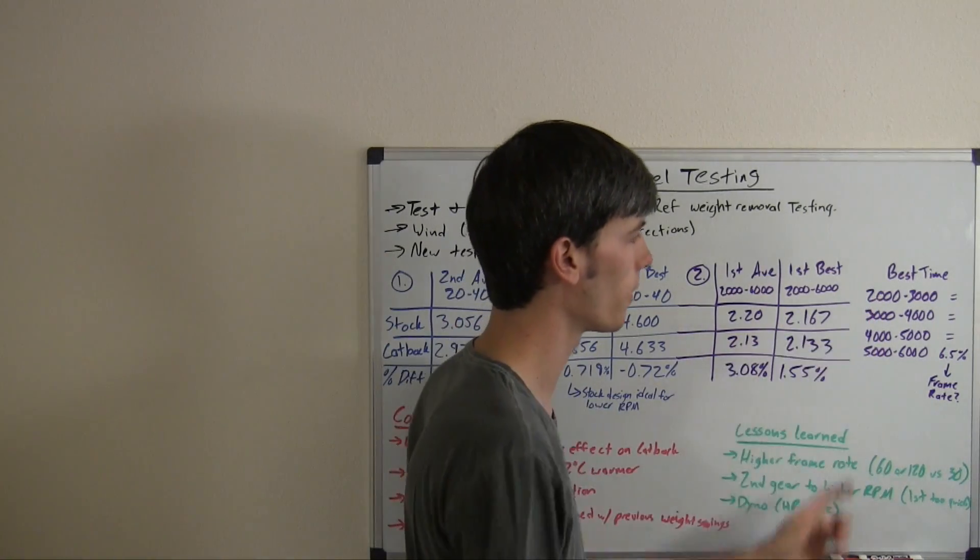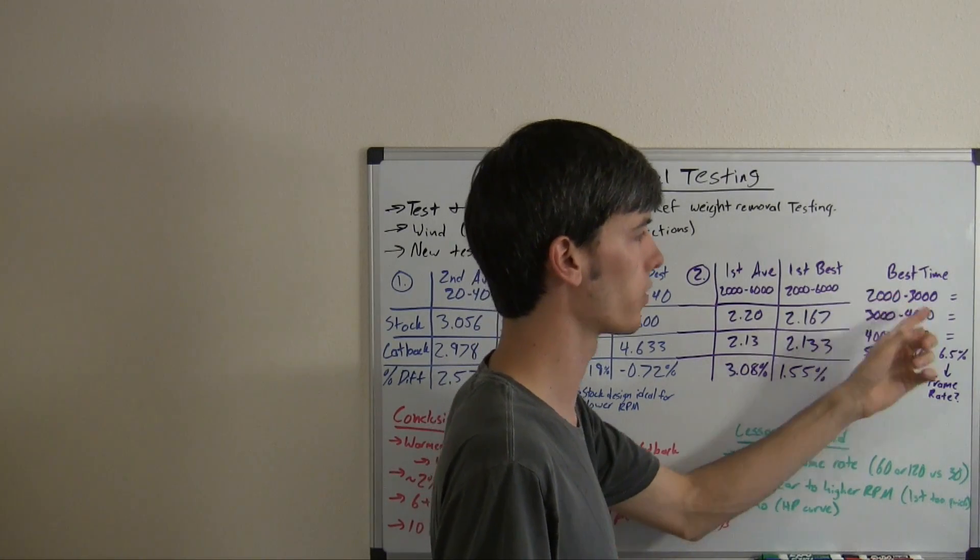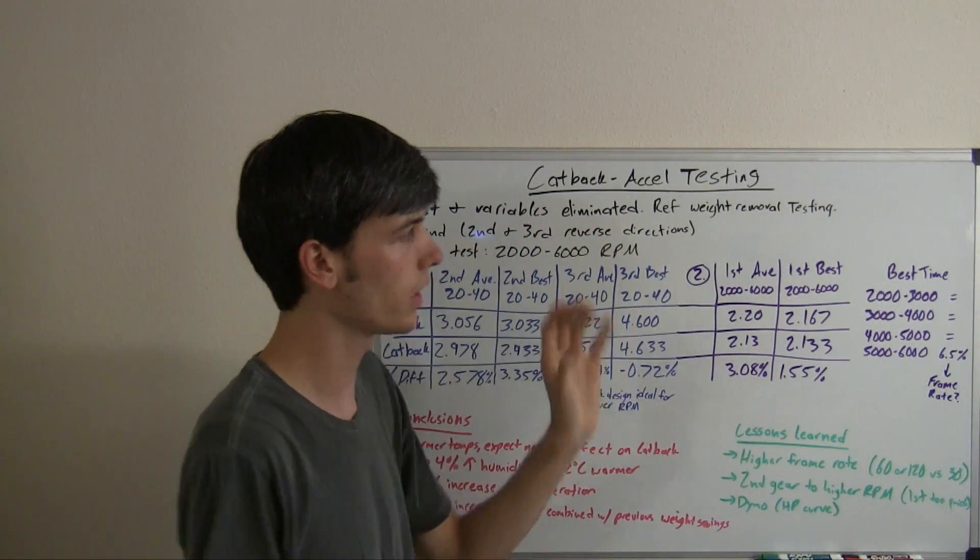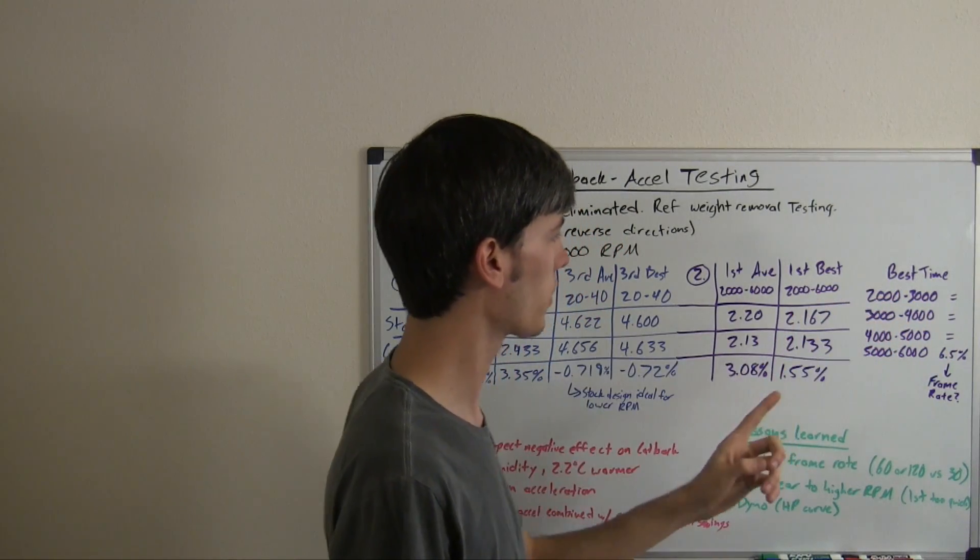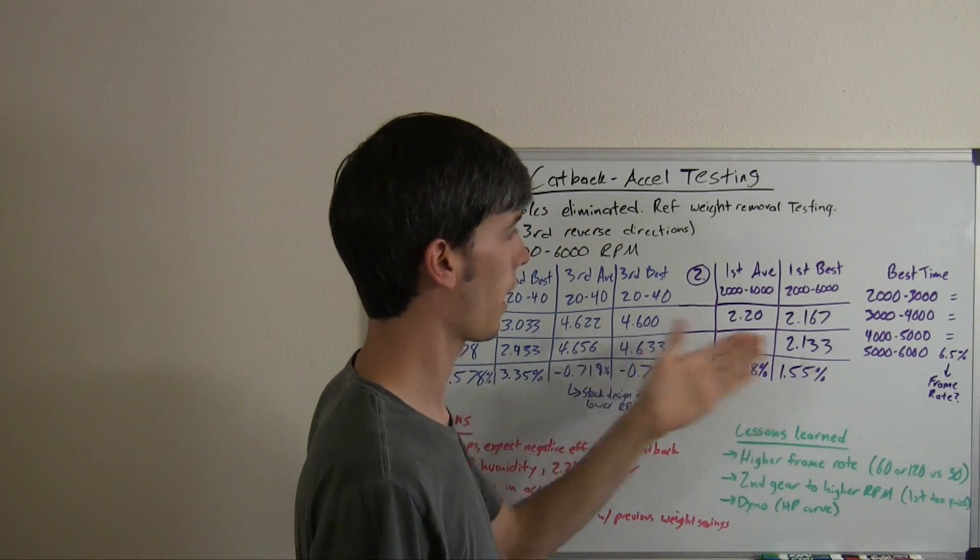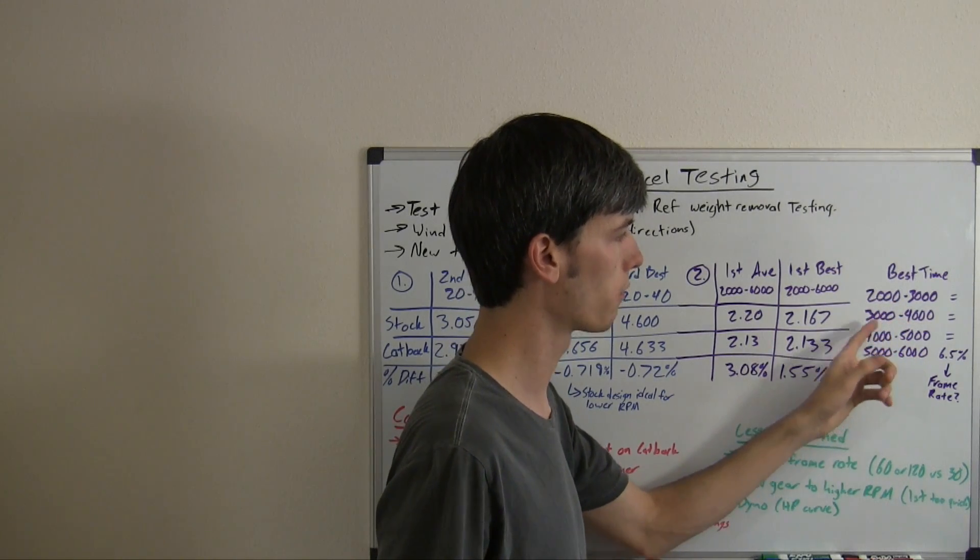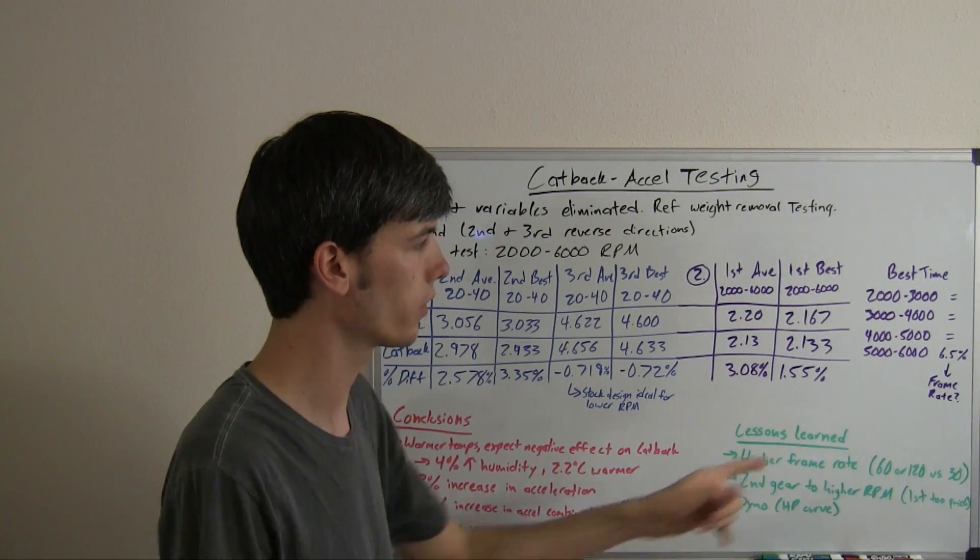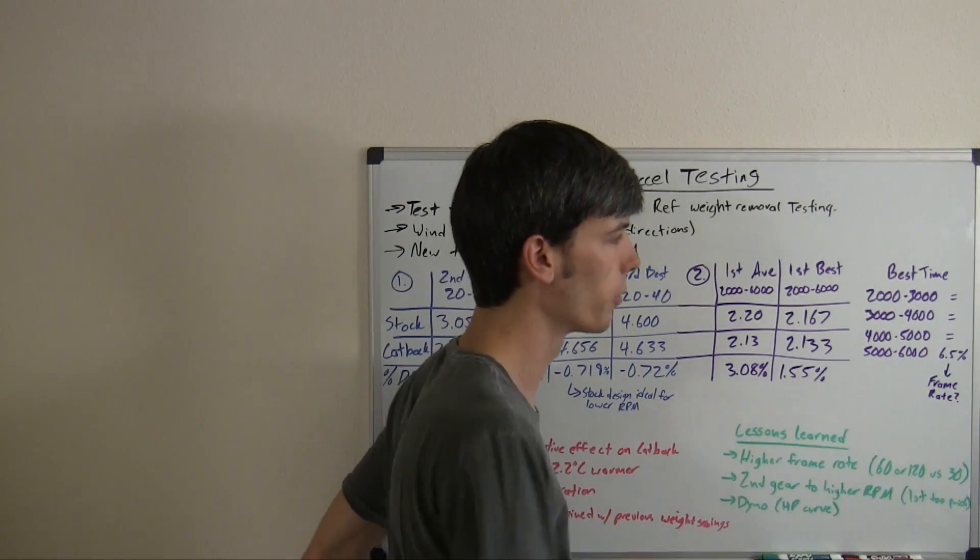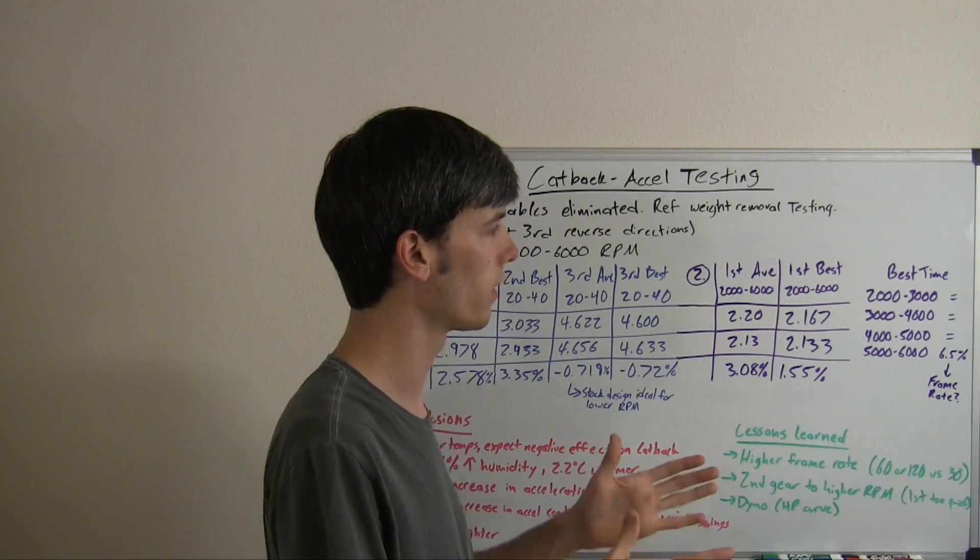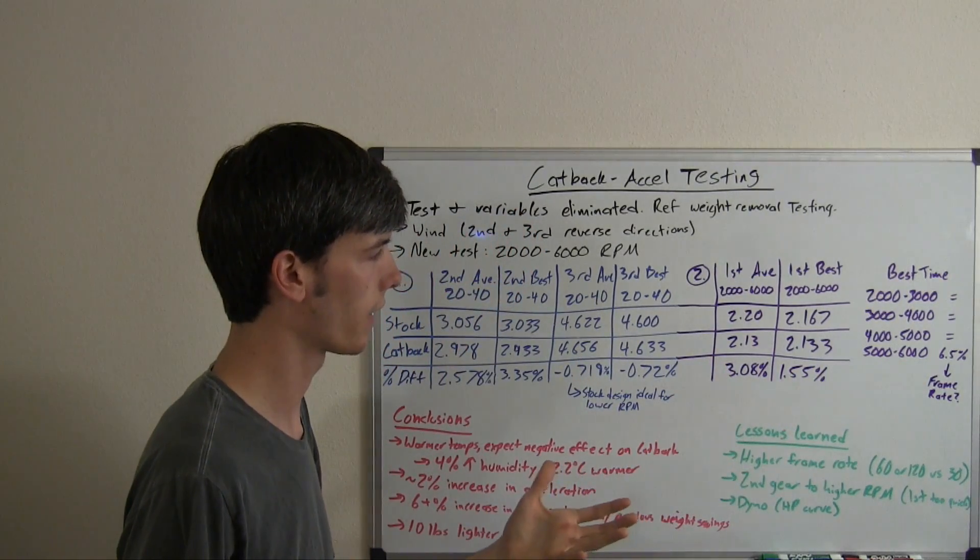An interesting thing that I did, I broke it down by RPM range, so I took the time it took to go from 2,000 to 3,000, then from 3,000 to 4,000, 4,000 to 5,000, 5,000 to 6,000, and I looked at each one of those times and the best possible time for each one. The best time for stock versus after installing the cat-back was exactly equal for 2,000 to 3,000 RPM, same with 3,000 to 4,000 and 4,000 to 5,000. The only improvement was from 5,000 to 6,000 RPM, and when just looking at the best time, that was an improvement of 6.5%.